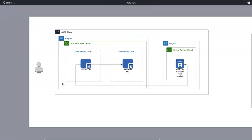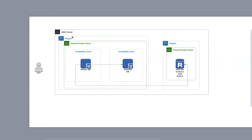Looking at an architecture diagram: an end user connects to the AWS cloud in the US East 1 (Northern Virginia) region. Within a VPC, a master database is placed in one availability zone with a standby database in another availability zone — synchronous replication for Multi-AZ. End users connect only to the master database. You can combine Multi-AZ with read replicas — creating a read replica in another region serving read-only traffic, with asynchronous replication from master to read replica.